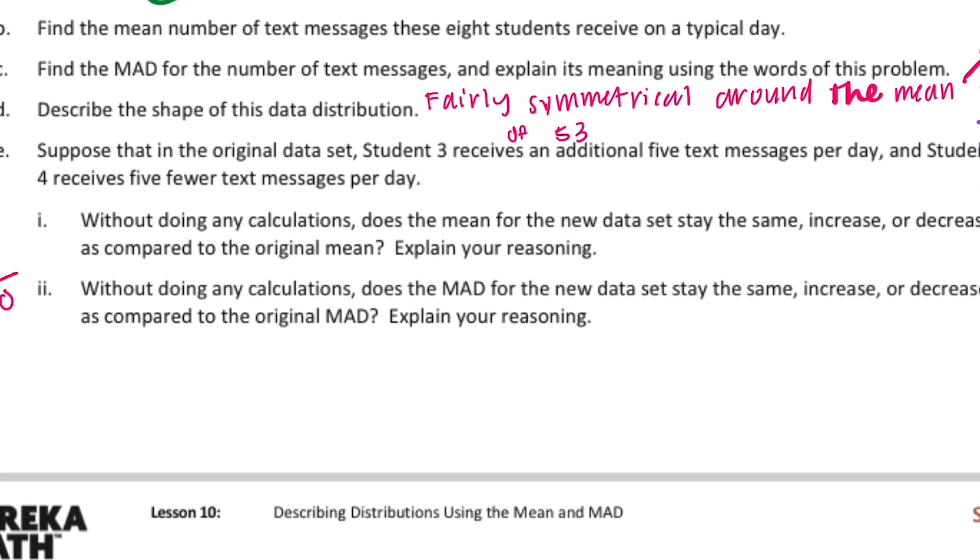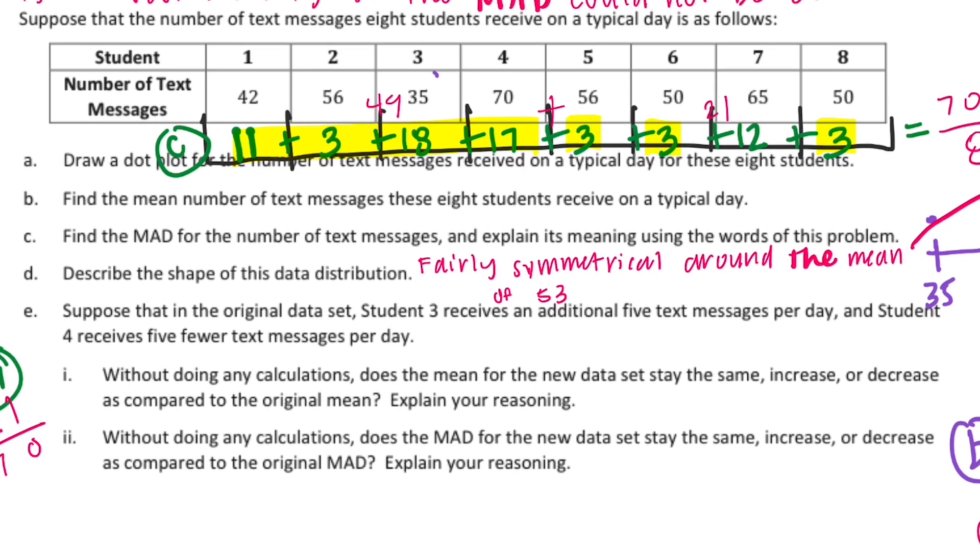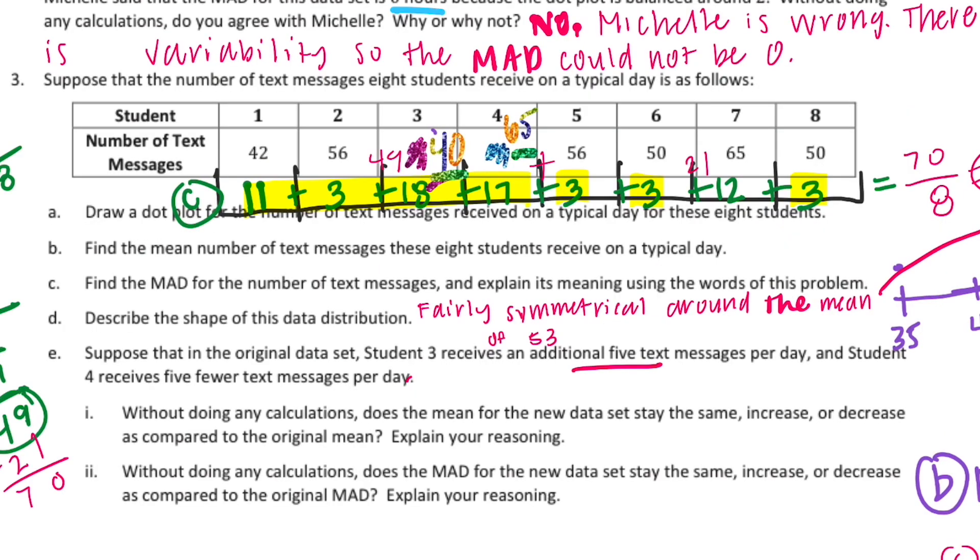And E, suppose that in the original data set, student 3 receives an additional 5 text messages per day, and student 4 receives 5 fewer text messages per day. Okay, so student 3 got 5. So instead of 35, let's find a new color here. Instead of 35, they got 40. And instead of student 4, they got 5 fewer. So student 4 instead got 65. Okay, so since we added 5 and took away 5, what's going to happen is the mean is going to stay the same. Because all we did was kind of balance what we did by adding 5, and then we negated it by subtracting 5. So everything is going to stay the same.